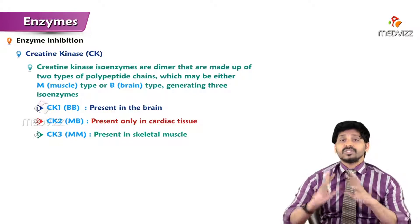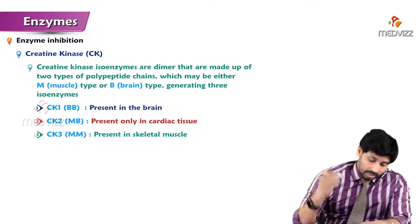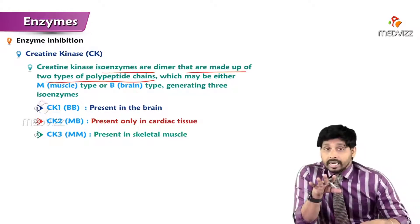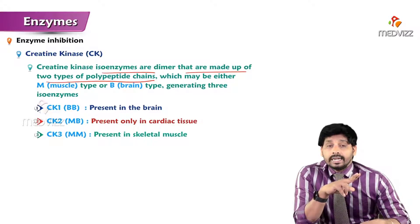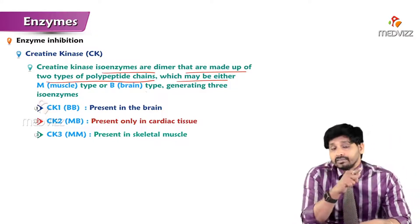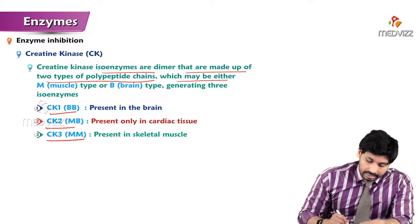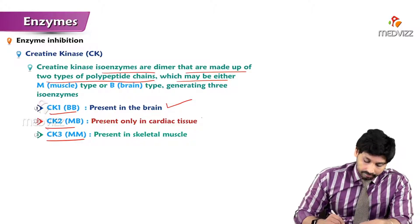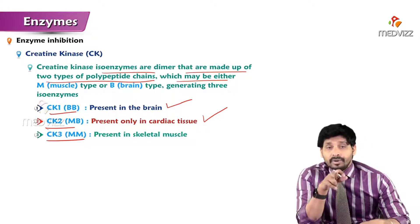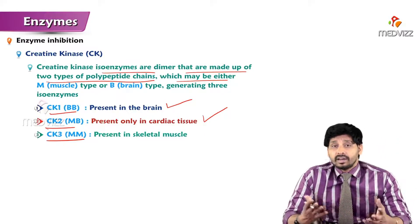Creatine kinase is present in skeletal and cardiac muscles. It is a dimer - made up of two polypeptide chains - whereas lactate dehydrogenase is a tetramer. The subunits are either M type or B type, compared to LDH which uses M type or H type. There are three types: CK1 is the brain type, CK2 is the cardiac type - elevated in myocardial infarctions - and CK3 is present in skeletal muscles.